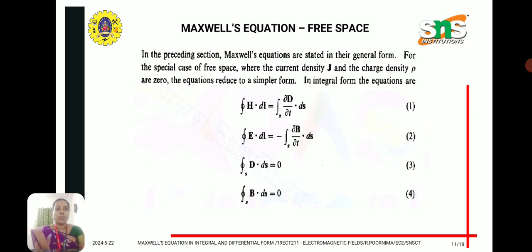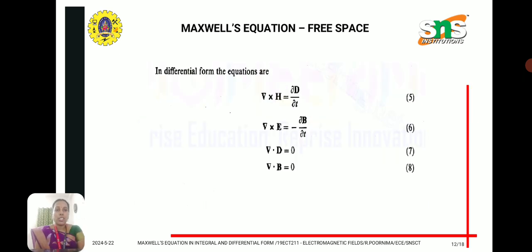For free space, we can write Maxwell's equations by substituting the free space condition where current density J and charge density rho are both zero. In the first equation, the J term becomes zero, leaving only the displacement current term. The second equation remains the same. In the third equation, the right-hand side becomes zero because rho is zero. In differential form for free space: del cross H = ∂D/∂t, del cross E = -∂B/∂t, del dot D = 0, and del dot B = 0.